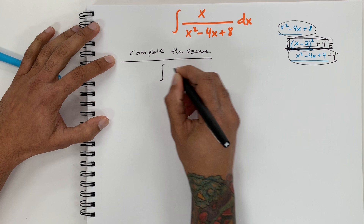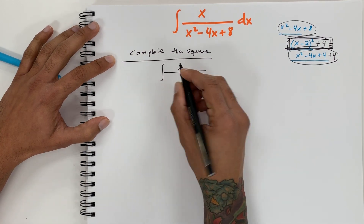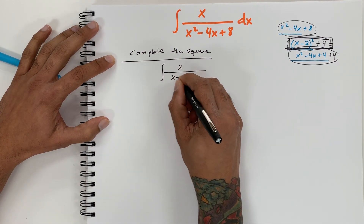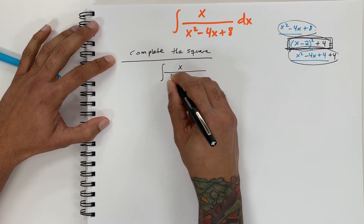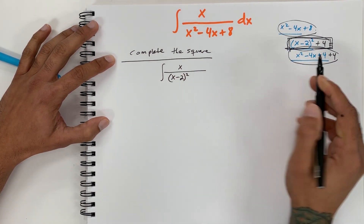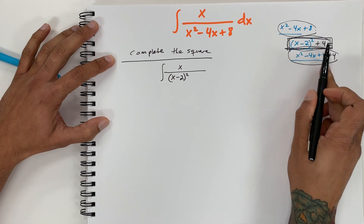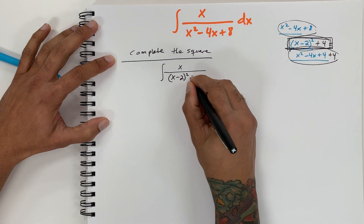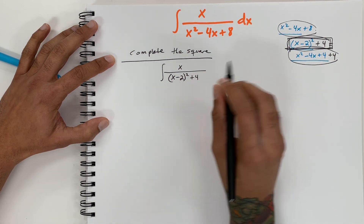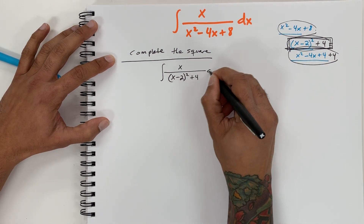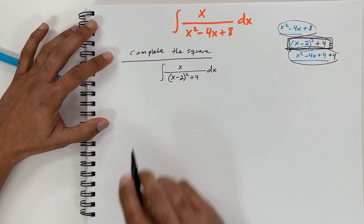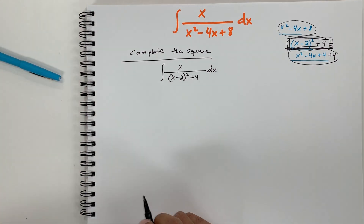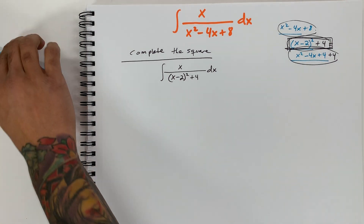So we can now rewrite the integral as the integral of x over (x minus 2) squared plus 4, dx.